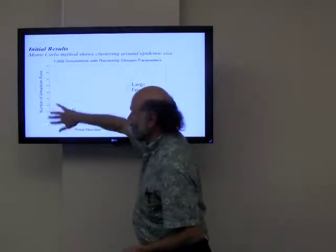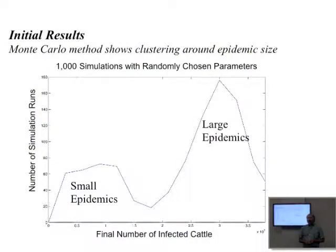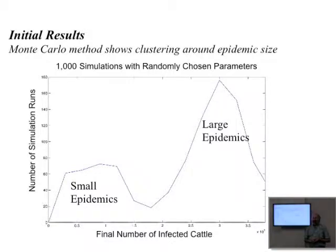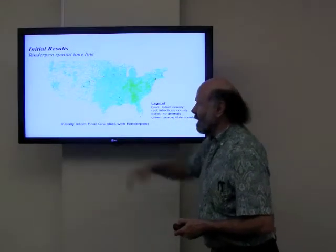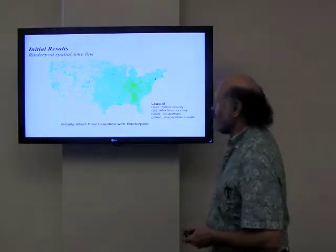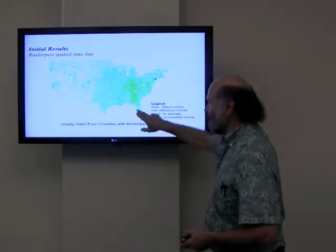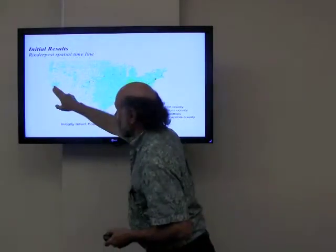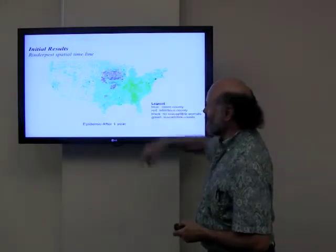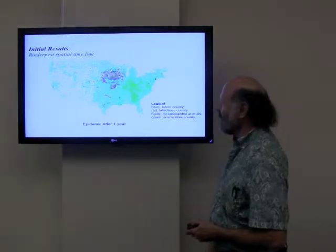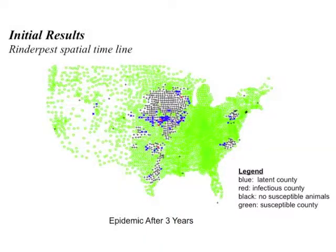We randomly started the epidemic around the country and found that sometimes there were large epidemics and sometimes small ones, and we wanted to understand why. We can visualize scenarios showing initial infected farms, counties with no infections, and counties with no cattle — like downtown San Francisco. We can watch as the epidemic spreads out, and in one case the Midwest was the key place where it spread. So we can ask what would happen if we did nothing, and then start looking at movement restrictions, culling, and surveillance.